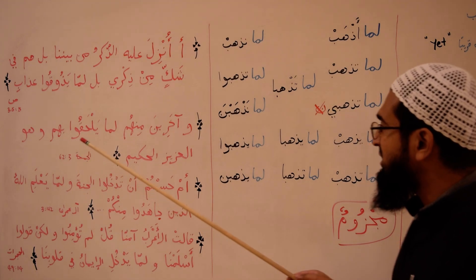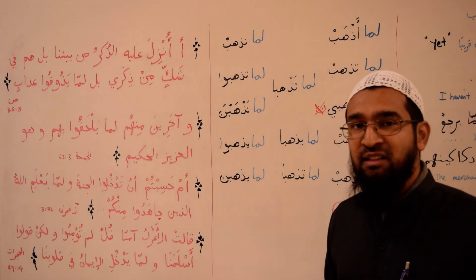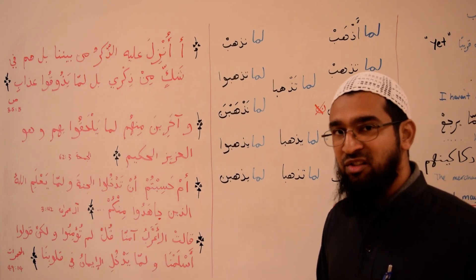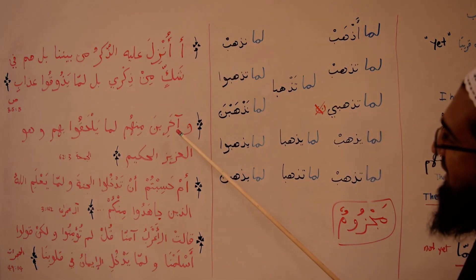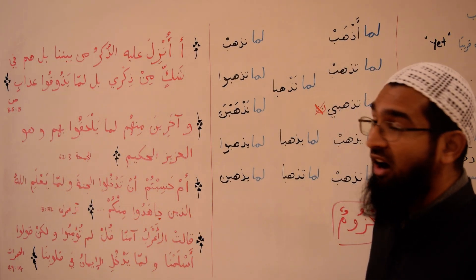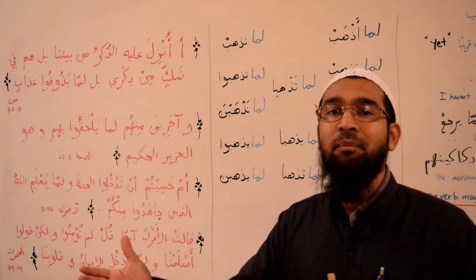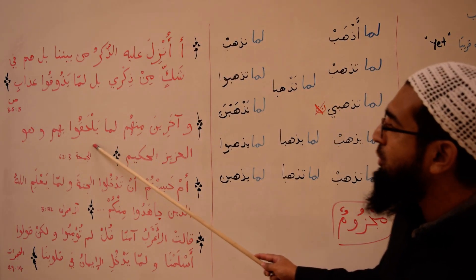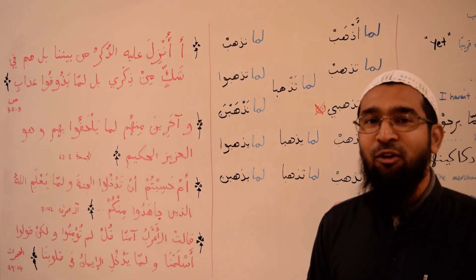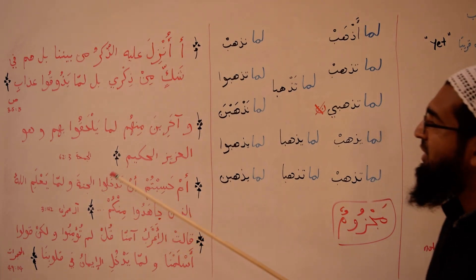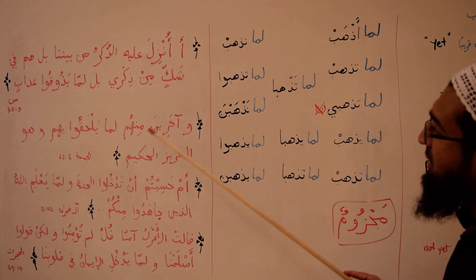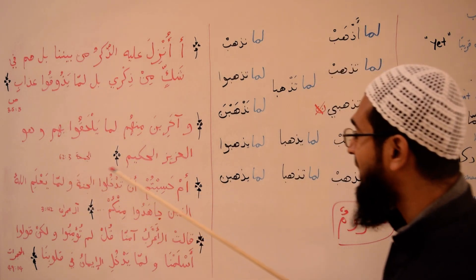The next example is in Surah Al-Jumu'ah, verse number 3. To understand this verse, Allah is saying he has sent the messenger to the early Muslims — basically the Sahaba, رضي الله عنهم, that early generation. Then he says: وَآخَرِينَ مِنْهُمْ لَمَّا يَلْحَقُوا بِهِمْ — meaning the Prophet was also sent to others from among them, those are the generations to come who were not around at the time of the Prophet ﷺ.